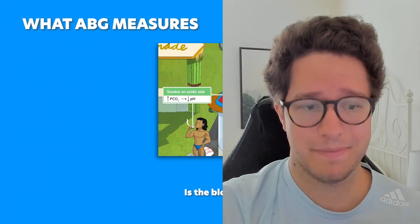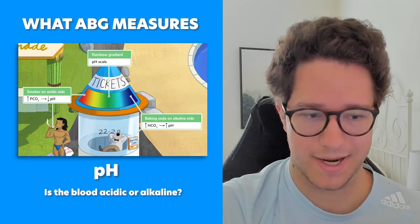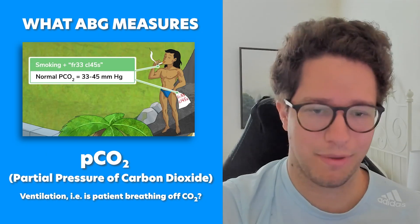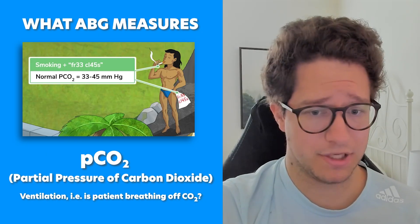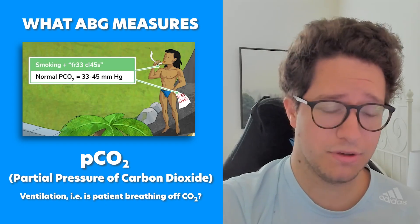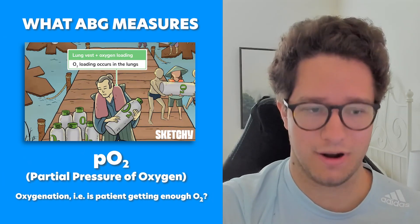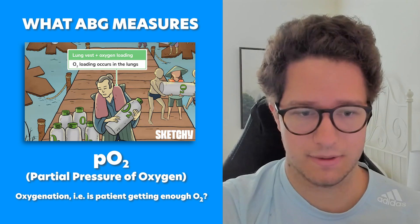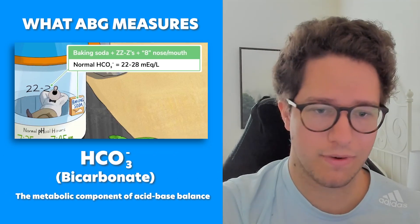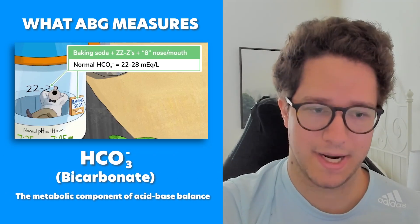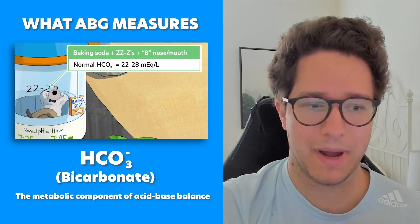Here's what it's going to measure. The pH tells you if the blood is acidic or alkaline. The PCO2, or partial pressure of carbon dioxide, tells you about ventilation — is the patient breathing off sufficient CO2, or are they retaining? The PO2, or partial pressure of oxygen, tells you about oxygenation, such as are they getting enough oxygen? And bicarbonate, or HCO3-, is the metabolic component of acid-base balance.